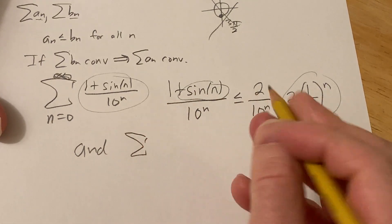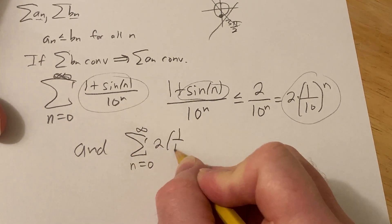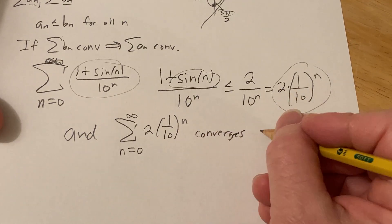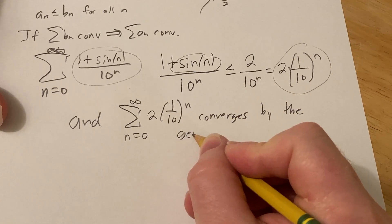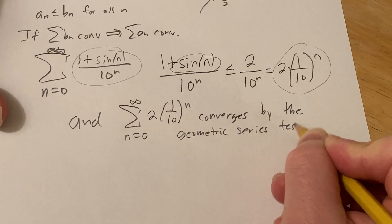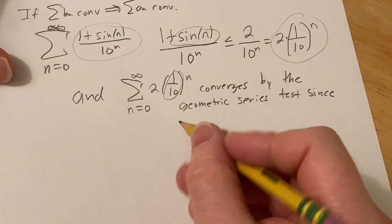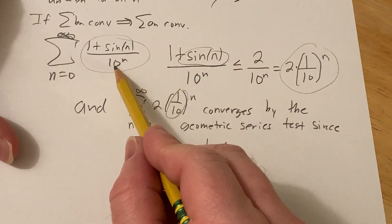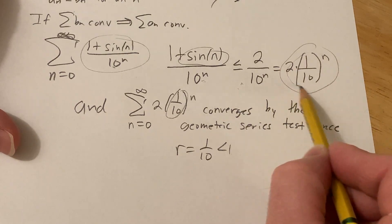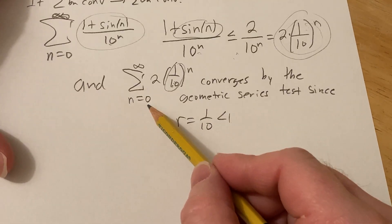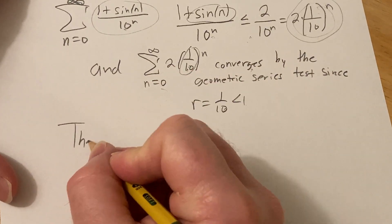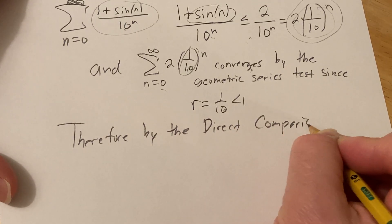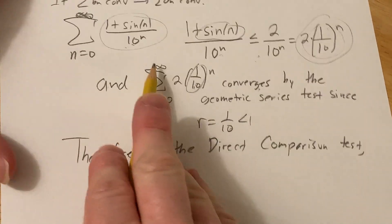The sum from n = 0 to infinity of 2 × (1/10)^n converges — it's a convergent geometric series by the geometric series test, since r = 1/10 and |r| < 1. So the terms of our series are less than or equal to the terms of this convergent geometric series.